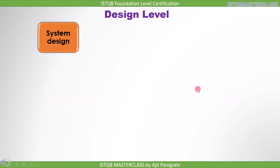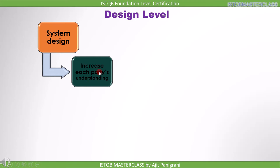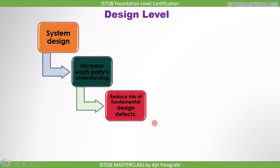Now let's discuss the second level of testing during the development process, and that is at the design level. At the design level there will be a system design, and our job is to do a review on it. Since there is no code we cannot run it, therefore we review it, which is a static testing technique. When we do this review it will increase team members' understanding — whether it is a tester, developer, or any other process person, everyone will have the same understanding after this review. If everyone has the same knowledge, it will help reduce the risk of fundamental design defects.